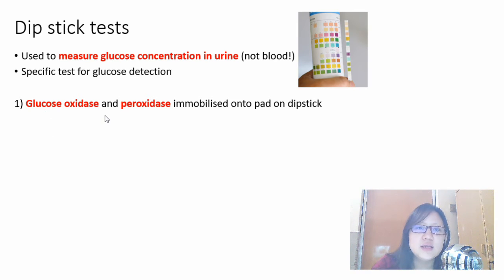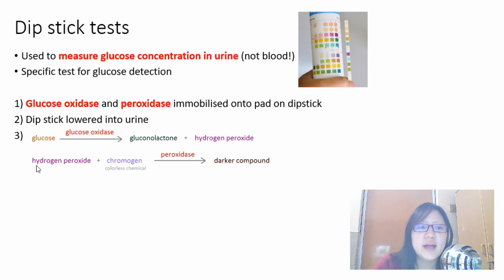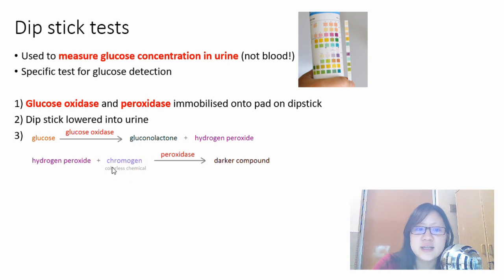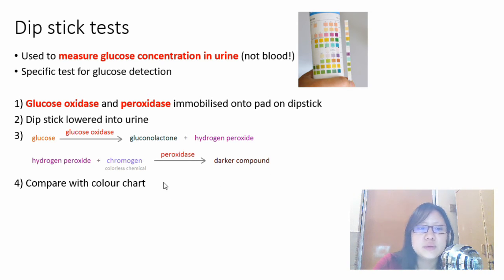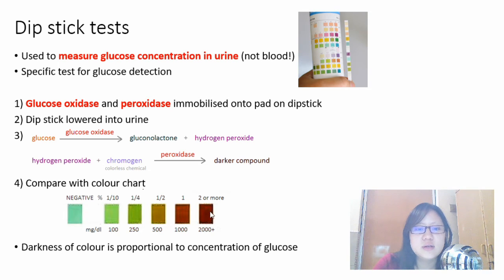The dipstick test works because it contains immobilized enzymes: glucose oxidase and peroxidase are immobilized onto a pad on the dipstick. When dipped into urine, glucose is catalyzed by glucose oxidase to form gluconolactone and hydrogen peroxide. These are colorless, but hydrogen peroxide reacts with a chromogen inside, catalyzed by peroxidase, to form a darker colored compound. This darker compound is visible and compared to a color chart — the darker the color, the more glucose is present. A negative result means no glucose.